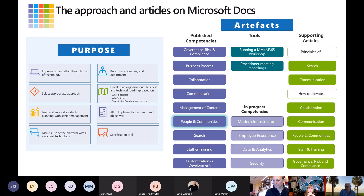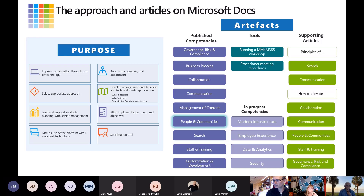The purple column in the middle is the competencies we've published so far. We've highlighted People and Communities because we're talking about that today. We have some competencies that are in progress — if you have thoughts about those, we'd love to hear them. We have some supporting articles in that brighter green on the right side which help you think about: if I'm at this level, how do I get to the next level, or how do I run a workshop — which is a tool at the top middle of the right side of the screen.